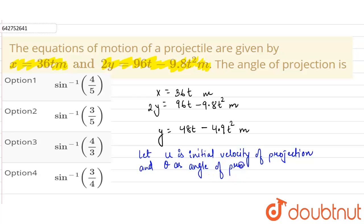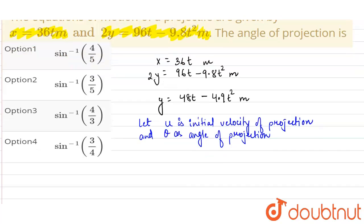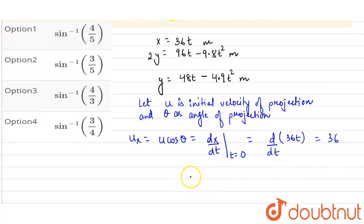The horizontal component of the projection will be ux equals u cos θ, and this will be given as dx upon dt at time t equals 0. So it will be d upon dt of 36t, which comes out as 36. Therefore, u cos θ equals 36. Let this be equation number 1.